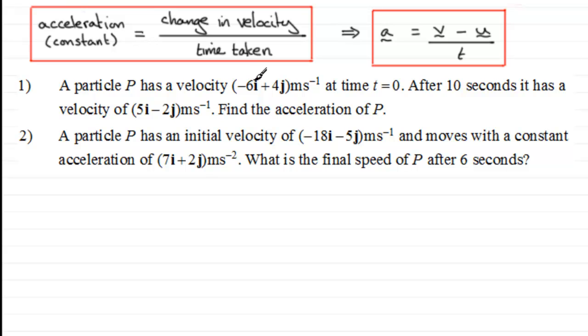In number one, we've got a particle P has a velocity of (-6i + 4j) meters per second at time t = 0, and after 10 seconds it has a velocity of (5i - 2j) meters per second, and what we've got to do is find the acceleration of P.